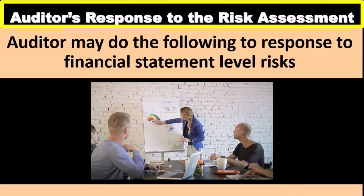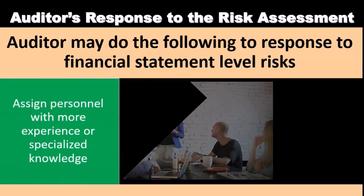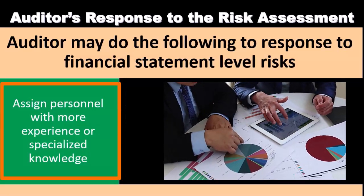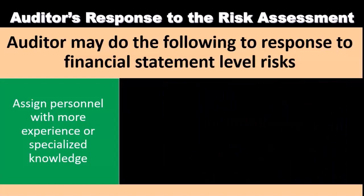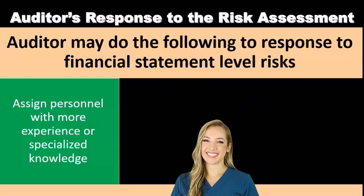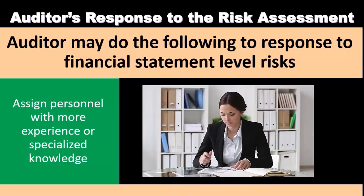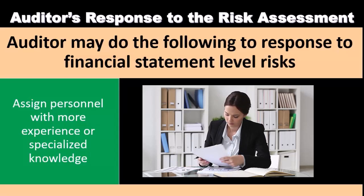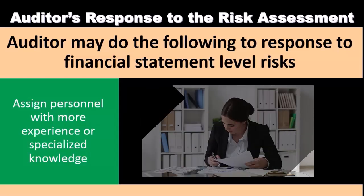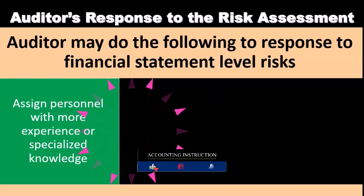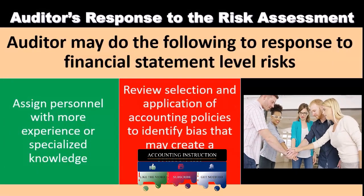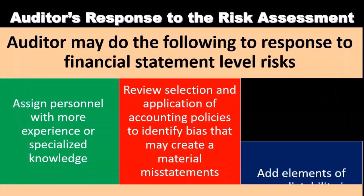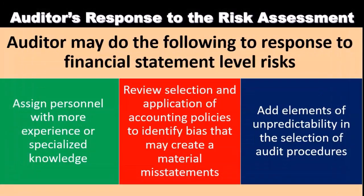Auditor's response to the risk assessment. The auditor may do the following to respond to financial statement level risk: assign personnel with more experience or specialized knowledge. If we see a financial statement level risk, part of the plan we might put in place is to assign more experienced or specialized personnel — people with more experience in the auditing process in general, or possibly people with experience with a particular set of problems in a specific industry or type of activity within that particular audit. We also review the selection and application of accounting policies to identify bias that may create a material misstatement, and add elements of unpredictability in the selection of audit procedures.